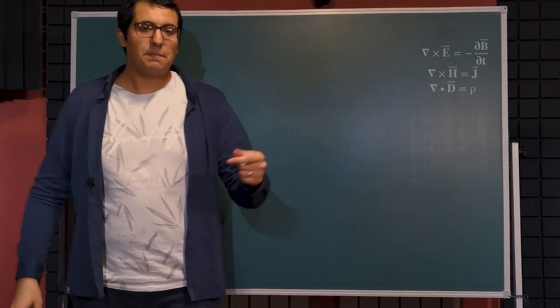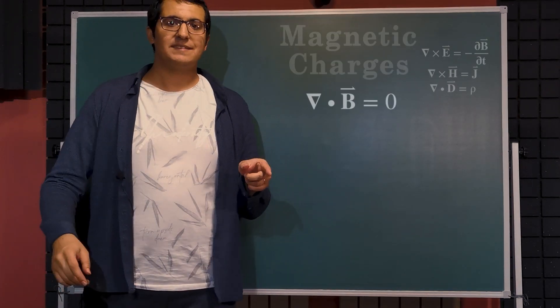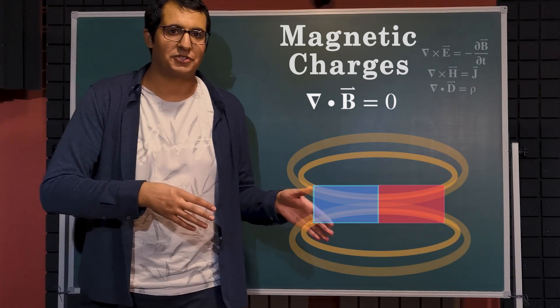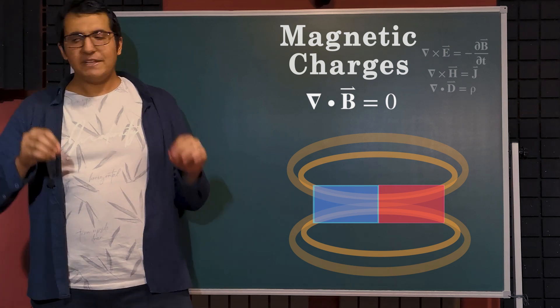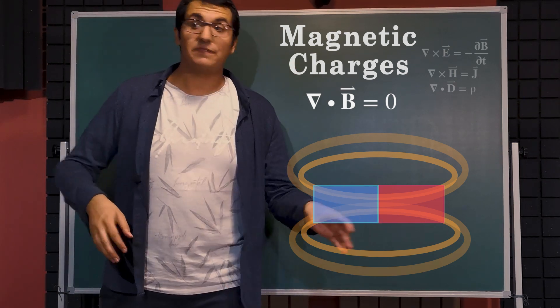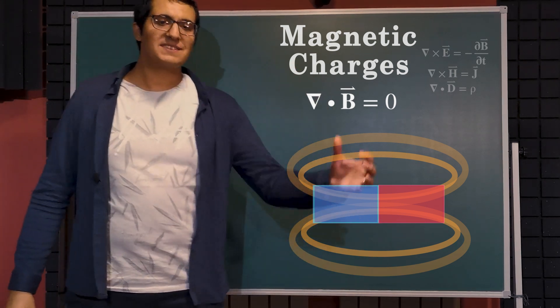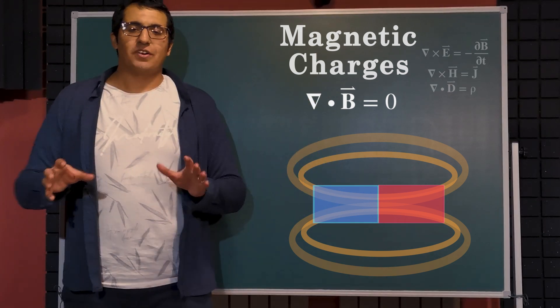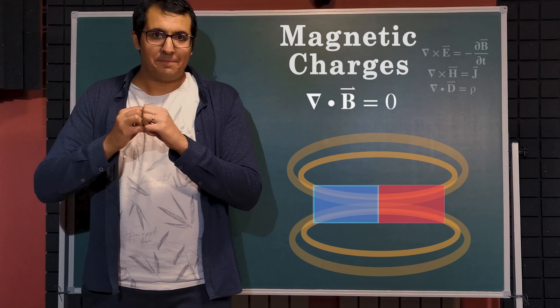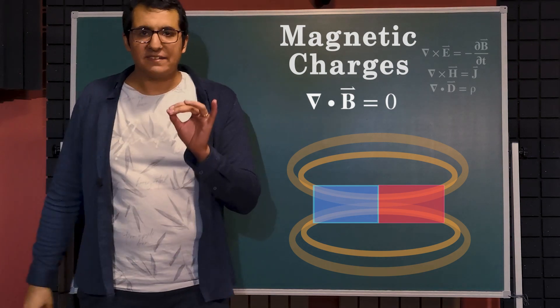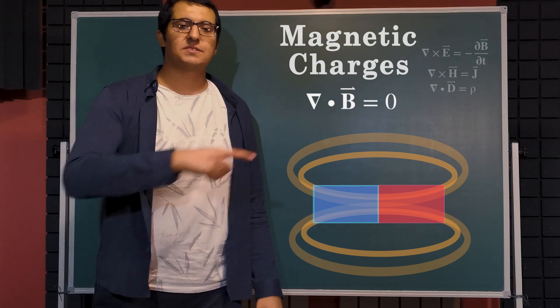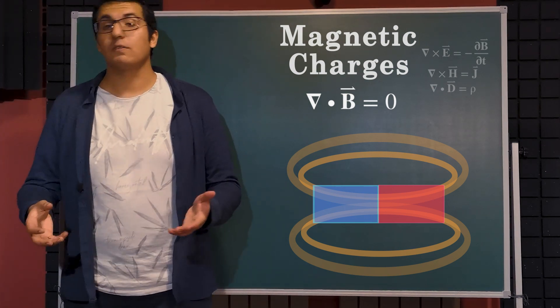And the last one is about the magnetic charges. In nature you cannot find any single magnetic charge that looks like electric charge. That means there will be no positive or negative or only north or only south magnetic charge in nature. So the magnetic charge in nature will always have to be together. That means a magnet will always have a north and south pole where the magnetic field exits north pole and terminates on the south pole.